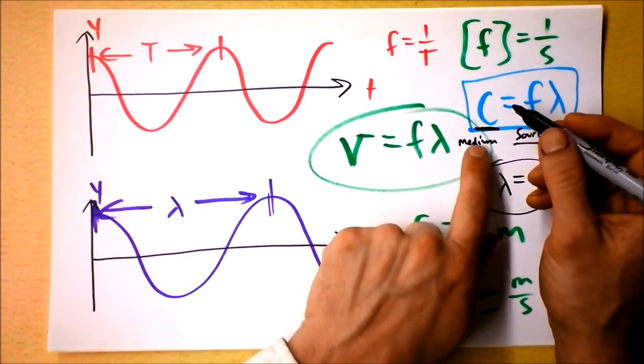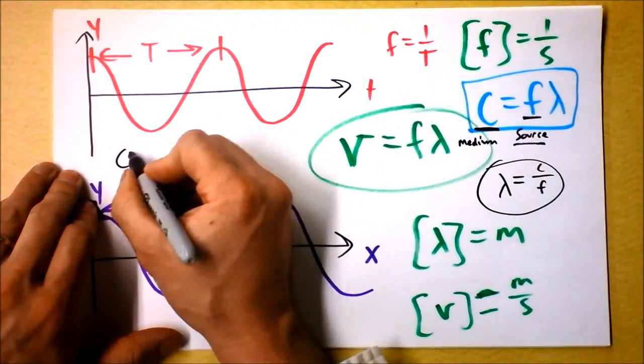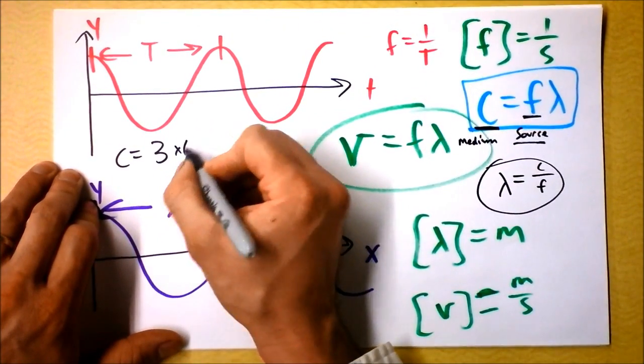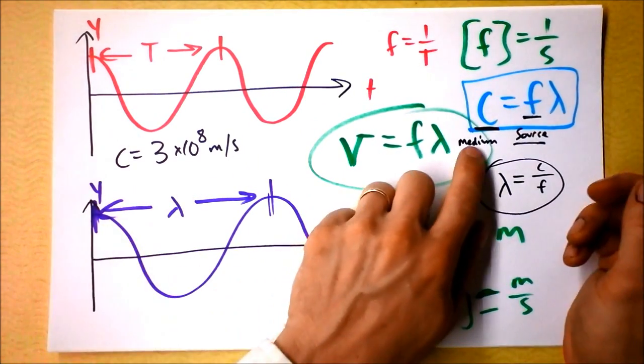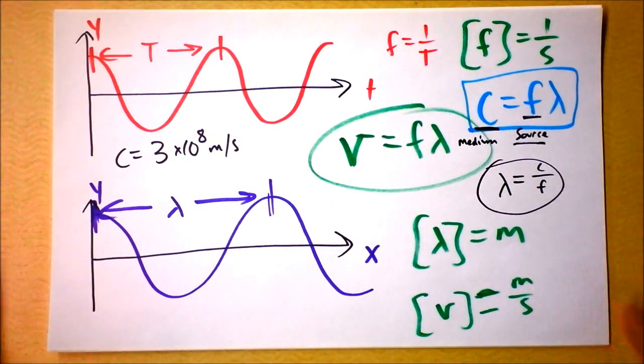And I guess we need to say that when we say c is 3 times 10 to the 8th meters per second, that's in a vacuum. So the medium is nothing at all. And we'll talk about that and all the effects that has later on.